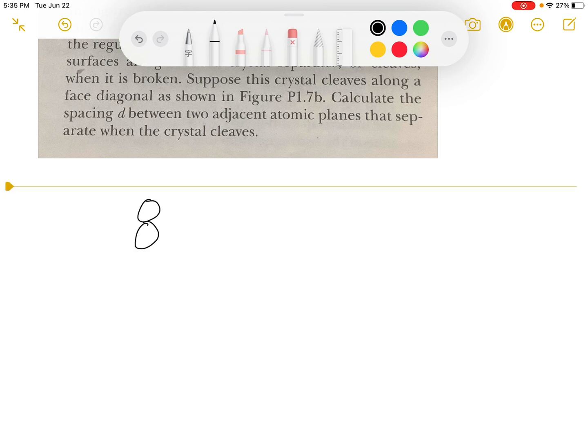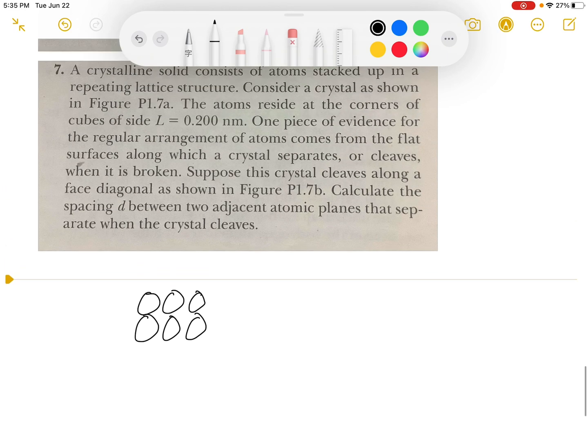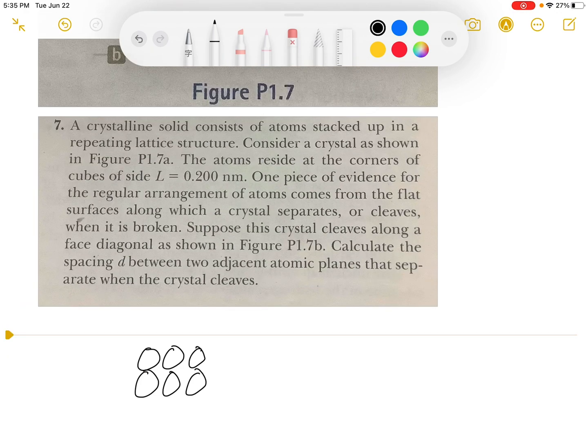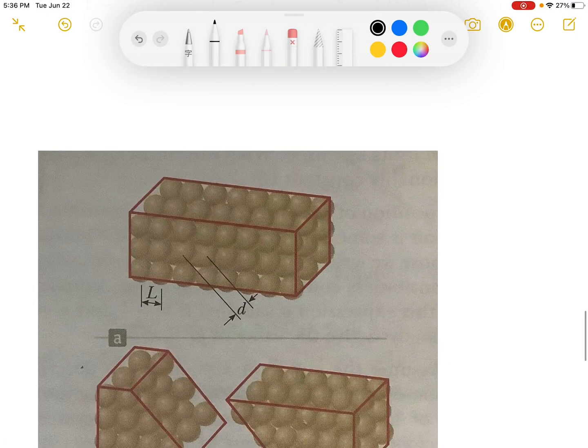So if we have atoms, they give us a distance between here and here would be L, and here and here would be L. So we need to find out the distance, the distance D.